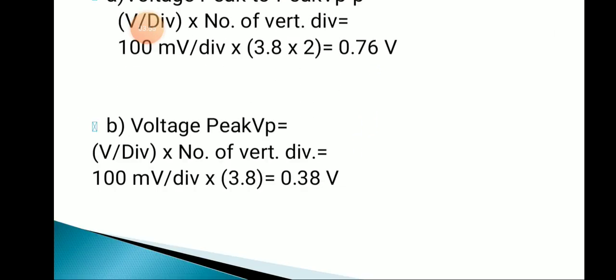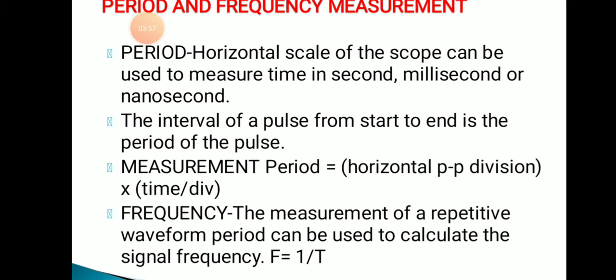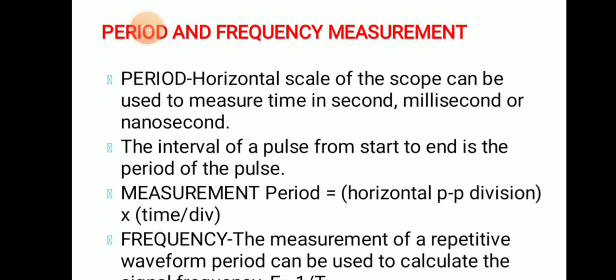Next we will move on to period and frequency measurement. The time period is the time required for the wave to complete one cycle — that is, the positive and negative half cycles. The period T equals time per division multiplied by number of divisions per cycle. If you want to calculate the frequency, F equals 1 divided by T, in terms of hertz, kilohertz, or megahertz.